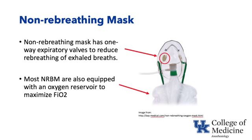The non-rebreathing mask is frequently used and is able to provide very high FiO2, sometimes as high as 90%. It requires three major things: a very tight-fitting mask, a one-way expiratory valve to reduce re-breathing of exhaled carbon dioxide, and a reservoir to ensure an adequate amount of oxygen is available to the patient during inspiration.